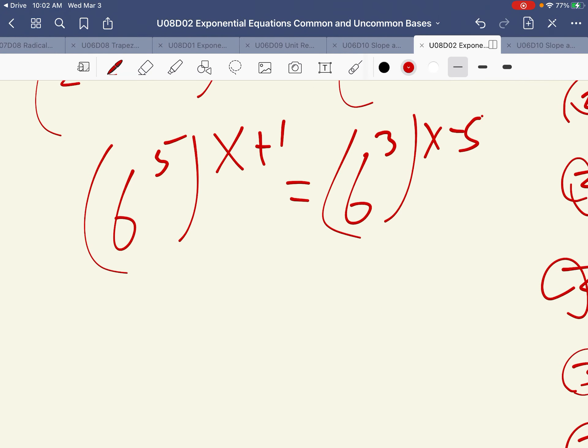And now we're going to distribute to the exponents. So this will become 6 to the 5x plus 5. Keep in mind there's like a parenthesis around these exponents. This is equal to 6 to the 3x minus 15. And now we can solve for the exponents.